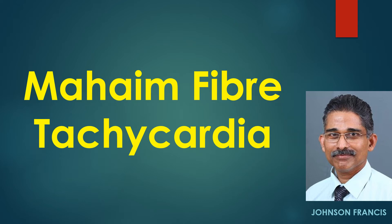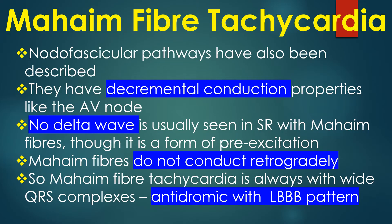Maheim fibers are a type of accessory pathway connecting the atria to the fascicular conduction system in the ventricles. Nodo-fascicular pathways have also been described. They have decremental conduction properties like the AV node. No delta wave is usually seen in sinus rhythm with Maheim fibers, though it is a form of pre-excitation.